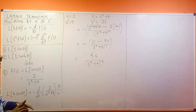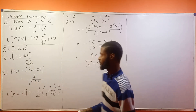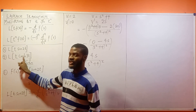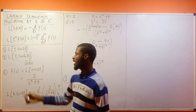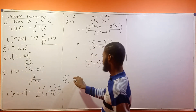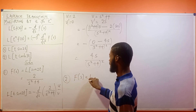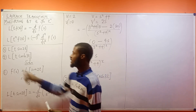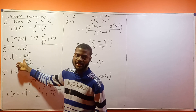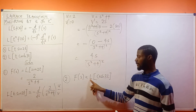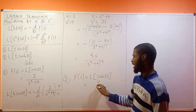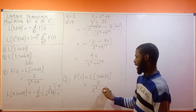So the Laplace transform of t·sine 2t is 4s over (s squared plus 4) squared. Now, question number two: what is the Laplace transform of t·cosh 3t? The first thing is to find F(s), which is the Laplace transform of cosh 3t. Normally cosh gives s over s squared minus 9 — it's a minus because it's cosh, and 3 squared gives 9.